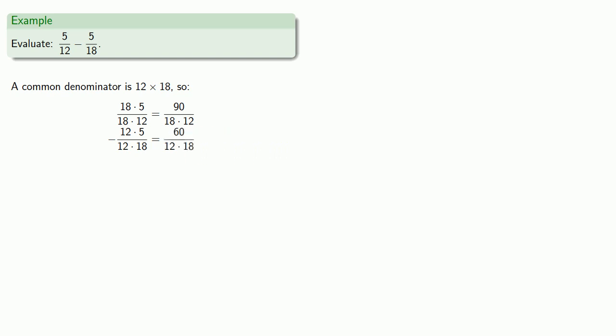Now we have the same denominator, eighteen times twelve, which is the same as twelve times eighteen. So we can subtract our numerators, ninety minus sixty, and we get our answer, thirty over eighteen times twelve.